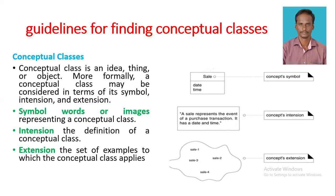The third one is extension. We know that the extension is the set of examples to which the conceptual class applies. Here there are four examples: sale one, sale two, sale three, and sale four as concept extension for the sale class.